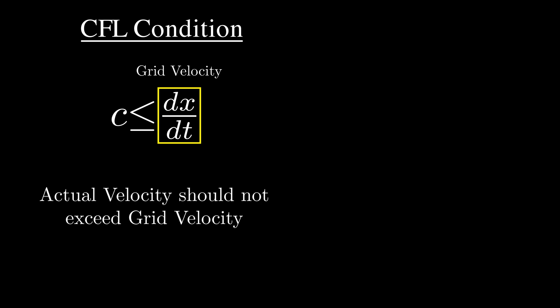Conceptually, this relation is quite interesting. On the right hand side, we have something that's known as a grid velocity. What this essentially tells is the minimum velocity that our grid can facilitate. And CFL condition basically tells that we should ensure that this is always greater than or equal to the actual medium velocity. If you think about it for a second, this actually makes sense.